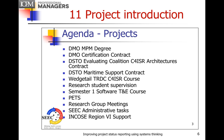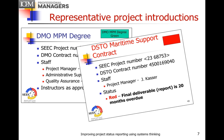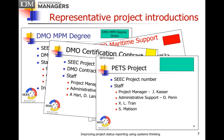The typical project introduction was a set of dot points for the 11 projects. Then the presentation would go into each project one at a time, with an introductory slide giving administrative information and showing the status traffic light signal. For example, the DMO MPM degree was green, the DSTO maritime support contract was red, the DMO certification contract was yellow, and the PETS project was green.